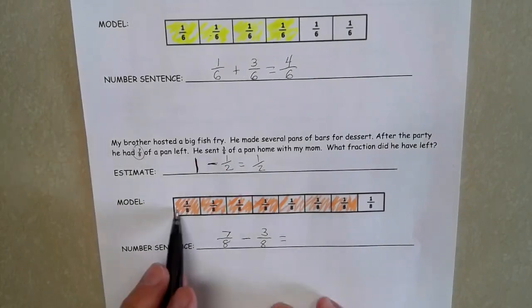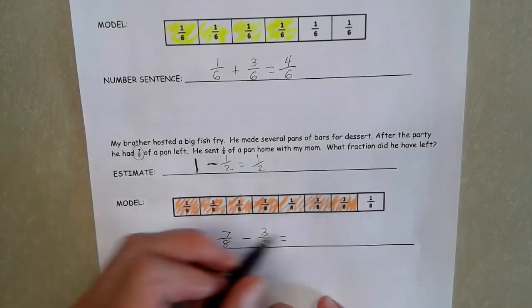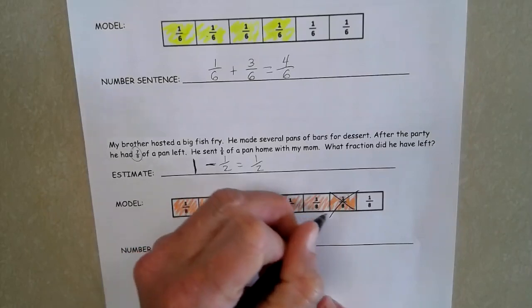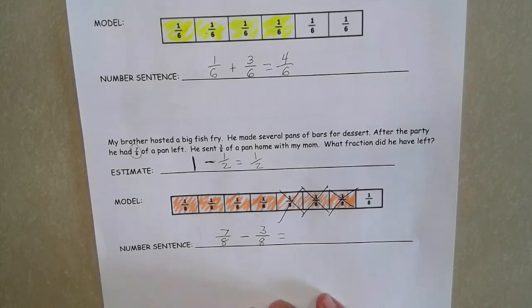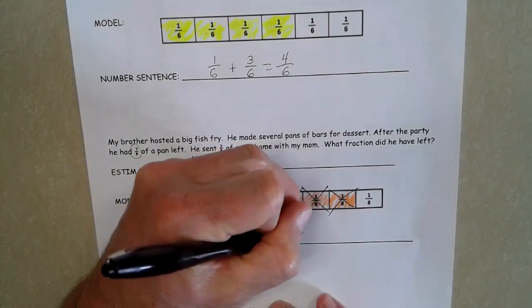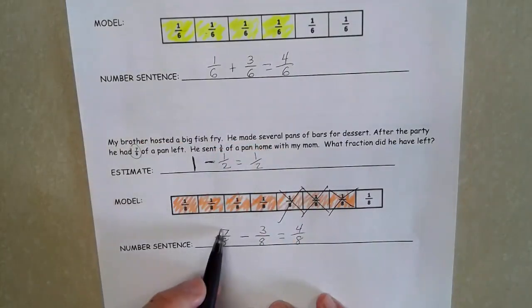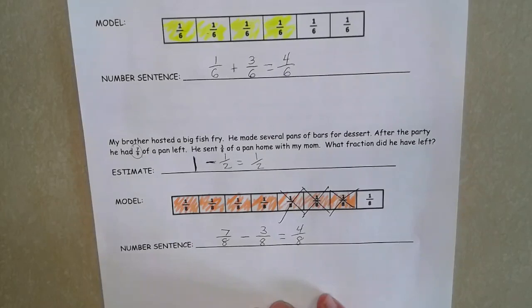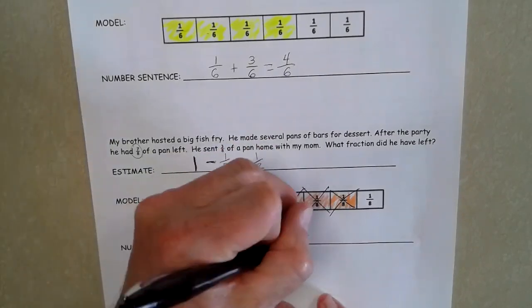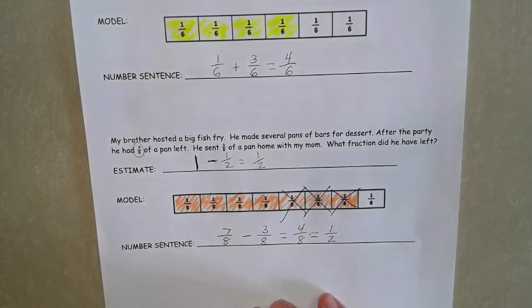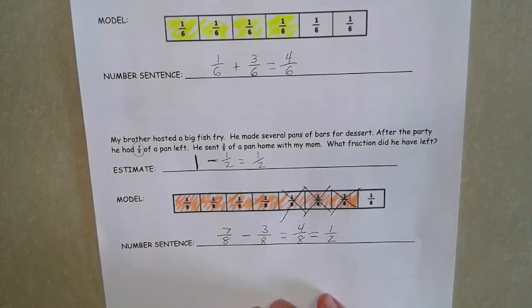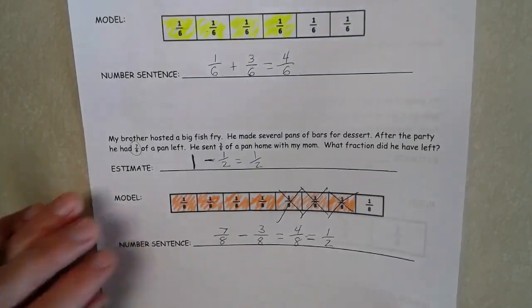So if I look at my seven eighths, this is what I started with, or seven out of eight, and we sent home three of those equal parts or three of those eighths with mom, that's going to leave us with one, two, three, four, or four eighths. If I look at it from a number perspective here, seven minus three is four, four out of eight parts, or four eighths, as we know, is equivalent to one half. So I have about half of that, and that was what our estimate was. We thought we'd have about half of the pan of bars left.